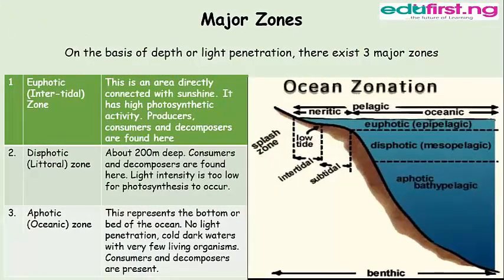We now want to discuss the major zones in the marine environment. On the basis of depth, light penetration, or vertical zoning of marine habitat, there exist three major zones: the euphotic zone, the dysphotic zone, and the aphotic zone.